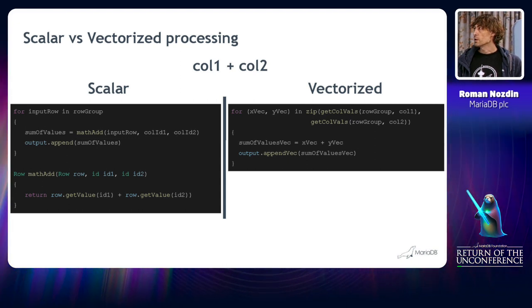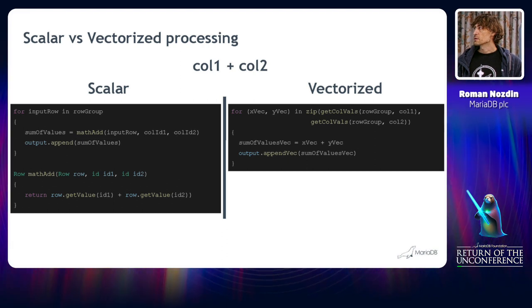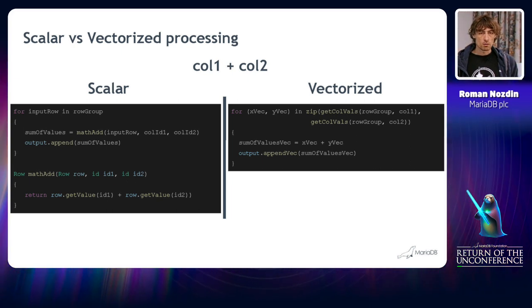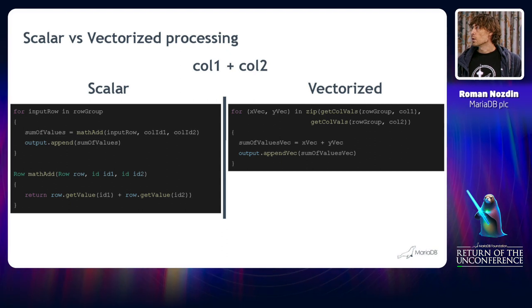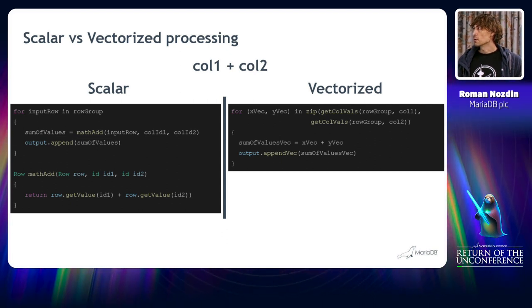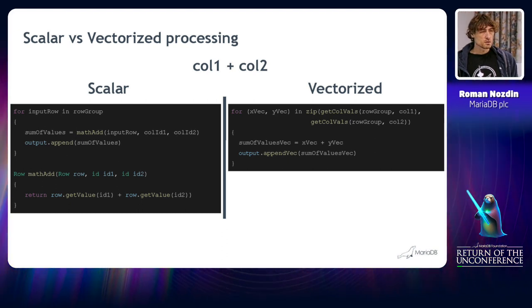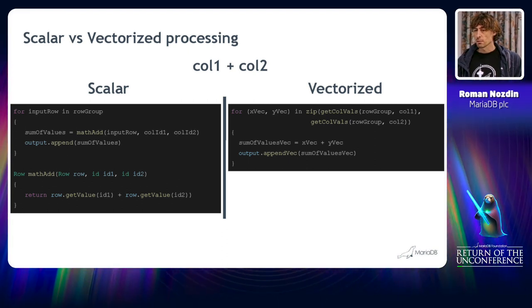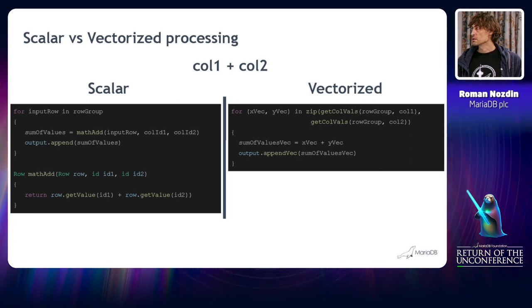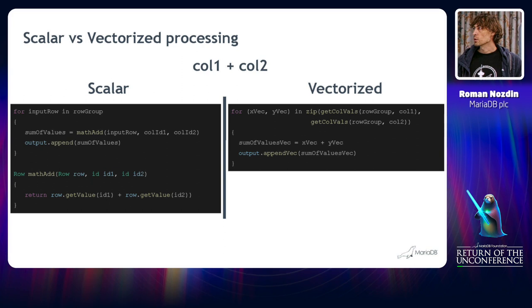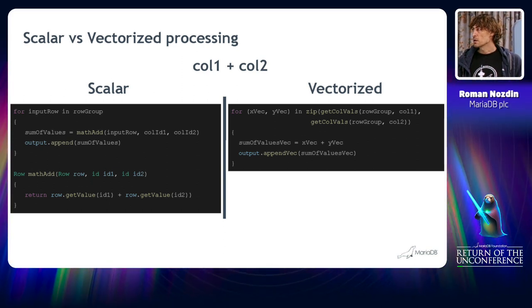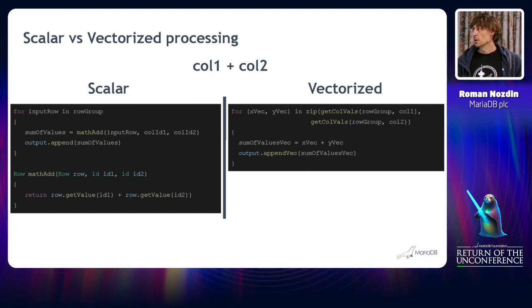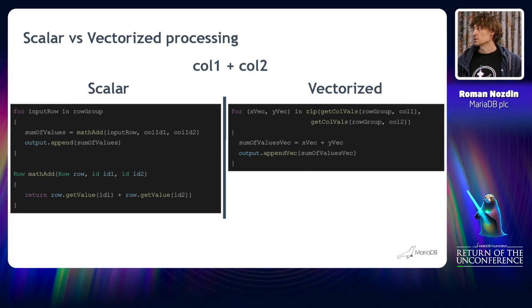In the vectorized world we iterate over the vector that might consist of a number of scalar values. It's usually the power of 2, like two values or 4 or 8, 16. And we sum up these vectors. It is basically the same what algebra does for vectors. We sum up separate scalar values of these vectors and in the end we have a vector that has these sums. And we take this vector and add it into the output. So basically we do 4 or 8 or 16 math additions at a time.